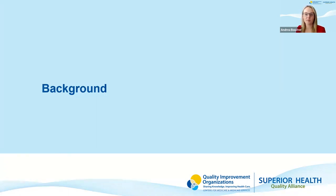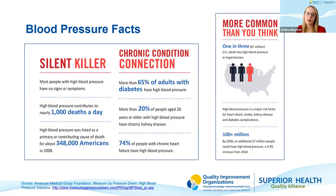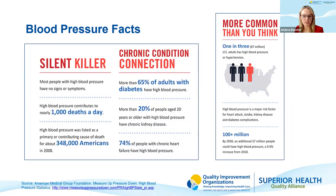Before we dive into proper blood pressure measurement technique, I want to talk about the importance of proper blood pressure measurement. One in three Americans has high blood pressure or hypertension, and it is more common among African-Americans and adults over the age of 60. High blood pressure is also commonly known as the silent killer because most people don't show any symptoms. More than 65% of adults who have diabetes also have high blood pressure, more than 20% of people 20 years and older with chronic kidney disease have high blood pressure, and 74% of people with chronic heart failure have high blood pressure.